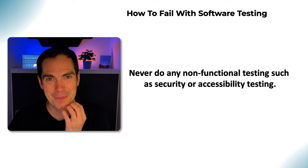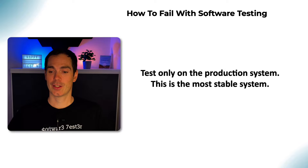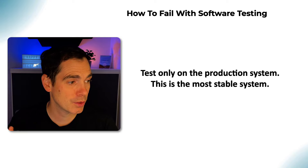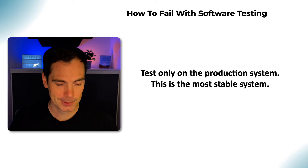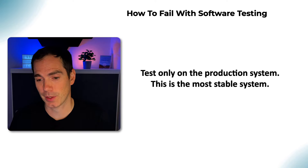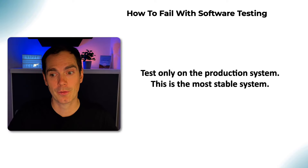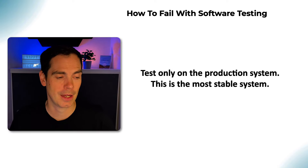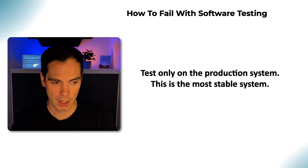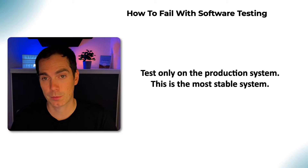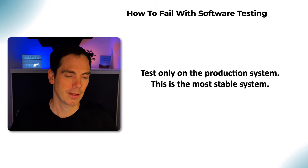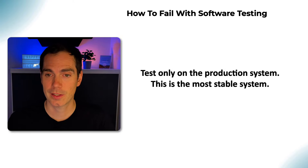Test only on the production system because it's the most stable system you have — and you will fail with that one, of course. We can do some testing on production to verify bits and pieces after a launch, but relying only on production is dangerous because of the data, the system, and the architecture you're using. Imagine using production data to run your automation and then accidentally changing or deleting database entries — have fun with that.